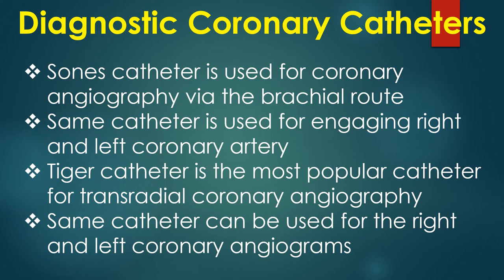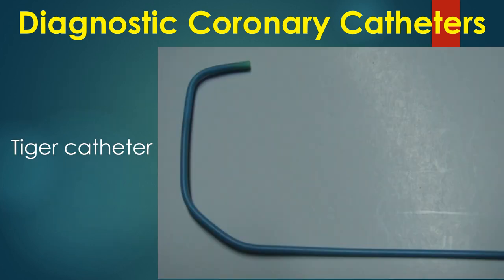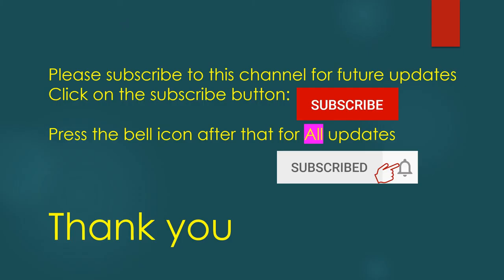The Tiger catheter is the most popular catheter for trans-radial coronary angiography. The same catheter can be used for both right and left coronary angiograms. As catheter exchange is avoided, the chance of radial artery spasm is lesser.